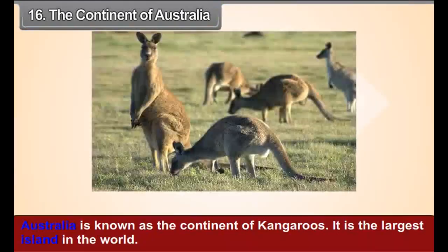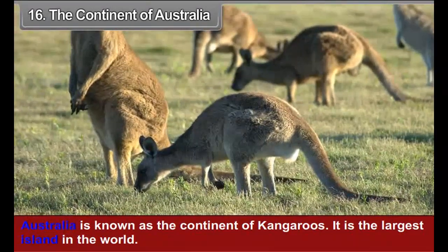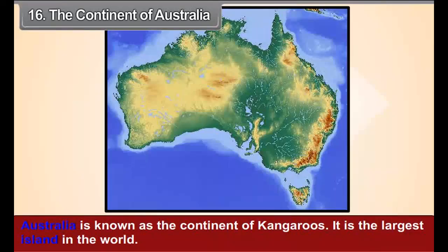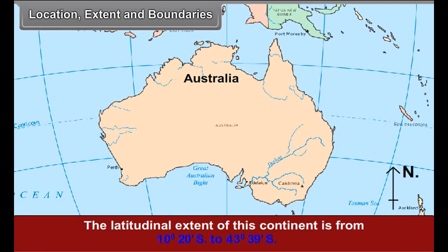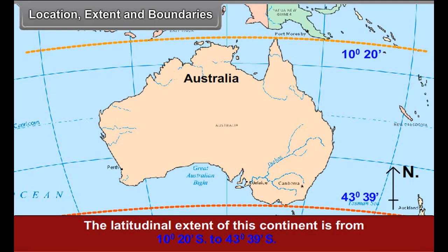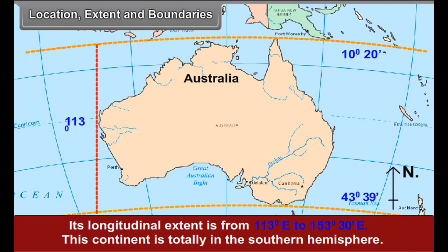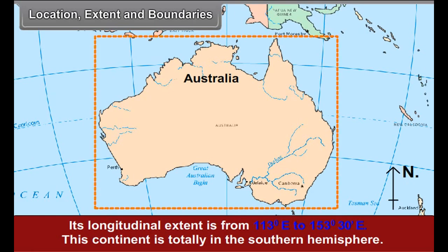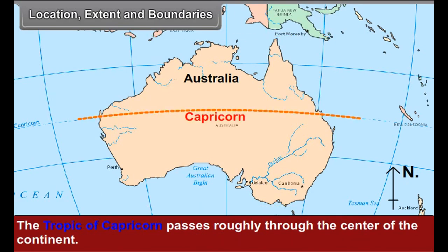Chapter 16: The Continent of Australia. Australia is known as a continent of kangaroos. It is the largest island in the world. The latitudinal extent of this continent is from 10 degrees 20 seconds south to 43 degrees 39 seconds south. Its longitudinal extent is from 113 degrees east to 153 degrees 30 seconds east. This continent is totally in the southern hemisphere, and the Tropic of Capricorn passes roughly through the center of the continent.